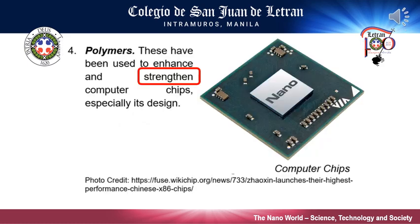For polymers, to keep pace with the constant miniaturization of computer chips, transistors must have increasingly small features. The use of carbon nanotubes is one technology that looks able to maintain the current pace of technology advancement by providing a sensible approach to smaller, faster transistors. Polymers through nanotechnology have been used to strengthen computer chips, especially in their design.